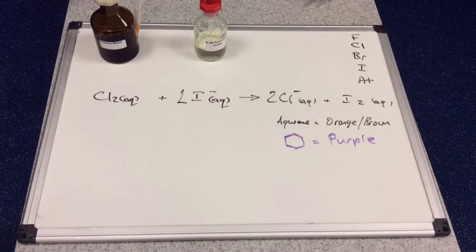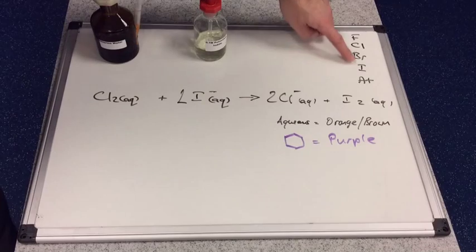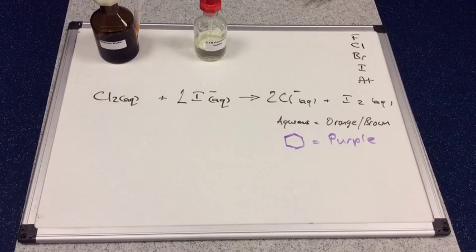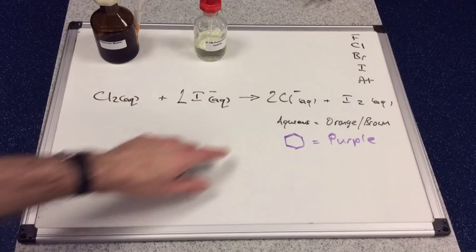Why does that happen? Chlorine's higher up the group than iodine, so it's got a smaller atomic radius, fewer shells, therefore less shielding, therefore greater attraction for this electron. And there's your colors.